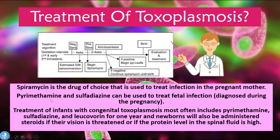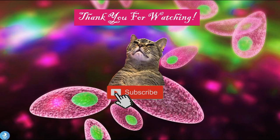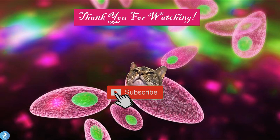Pyrimethamine and sulfadiazine can be used to treat fetal infections diagnosed during the pregnancy. Treatment of infants with congenital toxoplasmosis most often includes pyrimethamine, sulfadiazine, and leucovorin for one year. Newborns will also be administered steroids if their vision is threatened or if the protein levels in their spinal fluid are high.